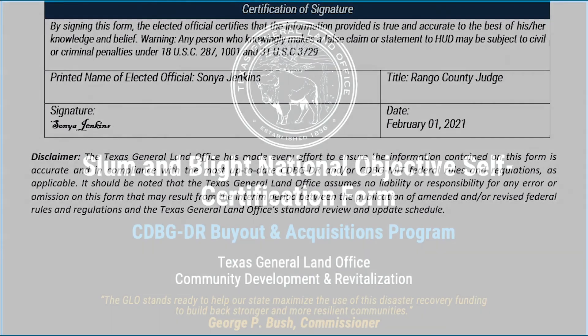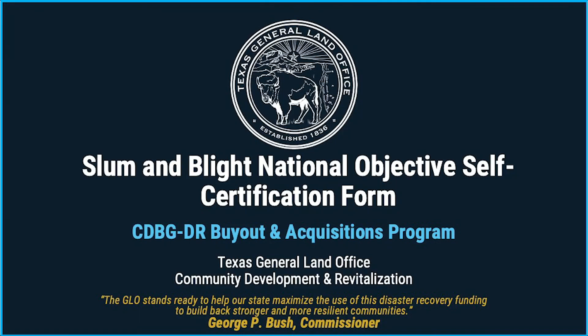The form then must be dated for completion. We hope you enjoyed this training on the Slum and Blight National Objective Self-Certification Form. If there are any questions during the completion of the form, subrecipients should reach out to their local General Land Office grant manager. Additional videos covering the other required local buyout and acquisition forms are, or will soon be, available at the same location you were viewing this one.